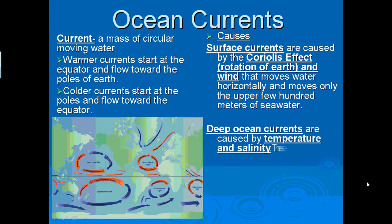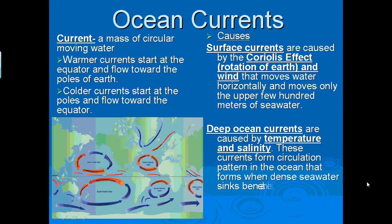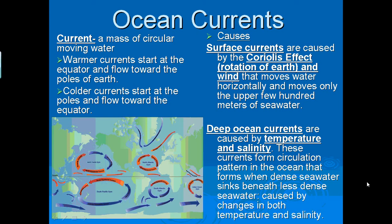We have another type of current, which is a deep ocean current, which is caused by temperature and salinity. These ocean currents form circulation patterns in the ocean that form when the dense seawater sinks beneath less dense seawater, caused by changes in both temperature and salinity.